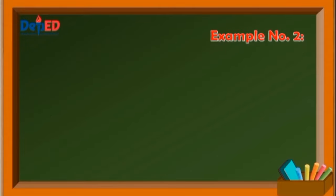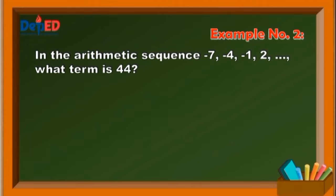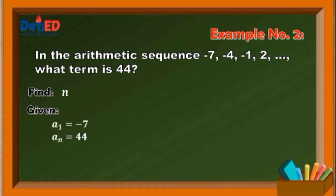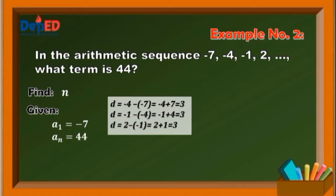Let us have this second example. In the arithmetic sequence negative 7, negative 4, negative 1, 2, and so on, what term is 44? You are asked to find the number of terms where 44 is located in the sequence. Then n here is the unknown variable. The given values are: a sub 1 is equal to negative 7. We know that 44 is part of the arithmetic sequence, but we don't know yet in what term it is placed. So let's denote a sub n is equal to 44. Let's compute the common difference: d is equal to negative 4 minus negative 7. Remember the rule of subtraction — keep change change. Thus d is equal to positive 3, and the common difference is equal to 3.